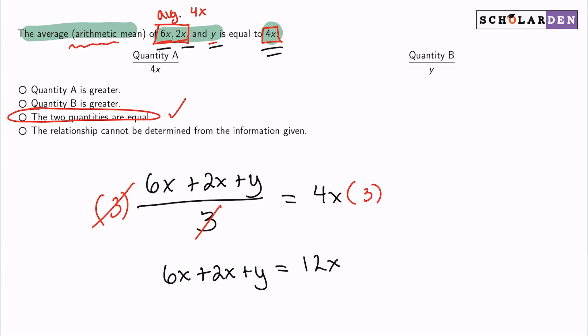Next, we can combine my terms here, 6x and 2x. That will give us 8x. So by subtracting 8x from both sides, I believe that we can see that y equals 4x.